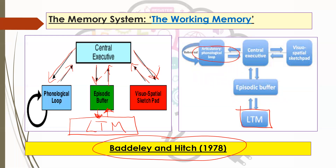There are various different images of this model you might encounter with a slightly different arrangement of the subsystems — don't worry too much about that. The key thing is that the central executive is at the top; that's the boss that delegates different jobs to the subsystems. Once you've got that image drawn, we'll move on to the more detailed part of the presentation.